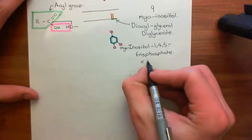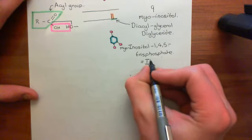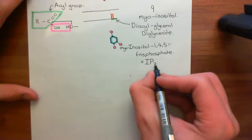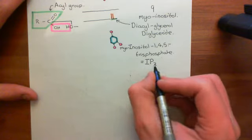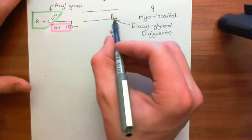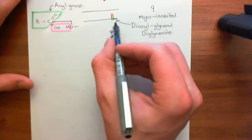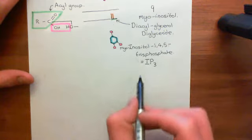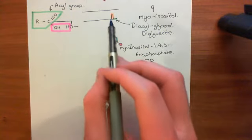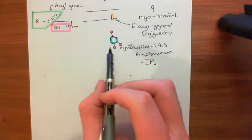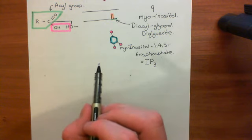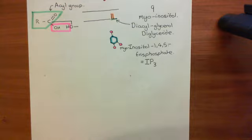For short, inositol-1,4,5-trisphosphate is denoted as IP3, where I is for inositol and P3 for the three phosphate groups. Phospholipase C beta cleaves phosphatidyl-inositol-4,5-bisphosphate into diacylglycerol and IP3. IP3 floats into the cytoplasm and works on receptors within the ER membrane. We will come back to diacylglycerol and continue this discussion in the next video.